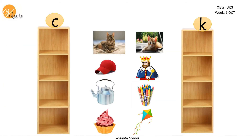Here we have two racks — one with letter C and the other with letter K. Some pictures are also given, and we have to arrange these pictures in the correct rack according to the beginning letter. C and K make the same sound K, but we have to identify which is the beginning letter. Let's start.